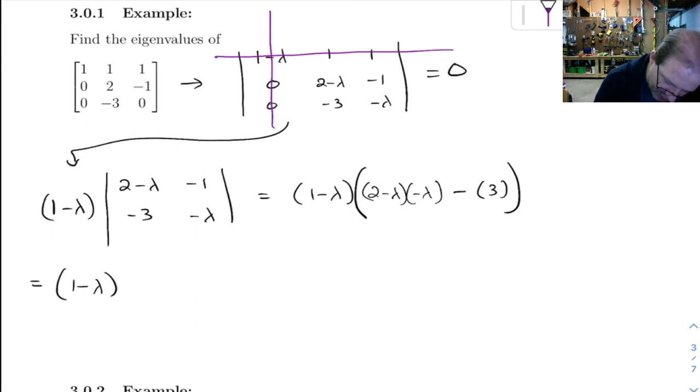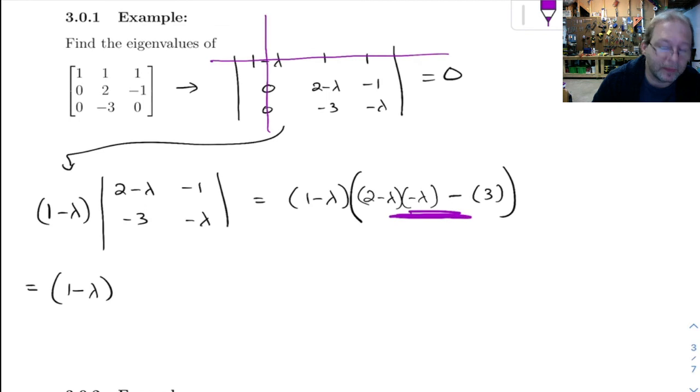So we've got 1 minus lambda. I'm going to come up here and do this inside of here. So let's see, if we distribute that lambda across, we get minus 2 lambda plus lambda squared. When you put that together, you get lambda squared minus 2 lambda minus 3.